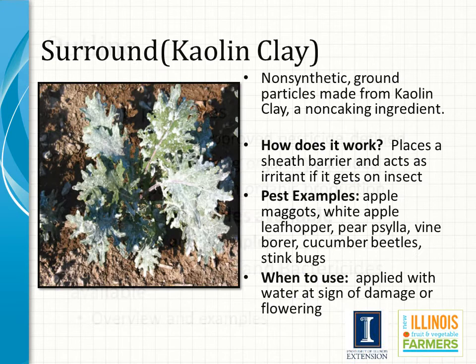We now move into the types of OMRI insecticides that are available. Surround, or kaolin clay, is a non-synthetic ground particle made from kaolin clay, which is a non-caking ingredient. It works by placing a sheath barrier on the plant itself to keep insects from chewing on the leaf tissue, and may also act as an irritant on the insect pest. Many insects are affected by Surround — for vegetable growers dealing with vine borer, cucumber beetles, and stink bugs on cucurbits, kaolin clay has been used. Because it can act as an irritant, you may want to apply it at first sign of damage or at flowering. This powder is typically applied with water.